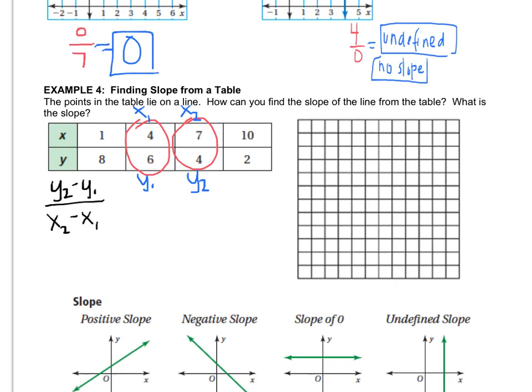So now you have everything labeled. And y2 is 4 minus 6 over 7 minus 4. And you could have called this x1 and y1 and this x2 and y2. It didn't matter. But anyway. So 4 minus 6 is negative 2 and 7 minus 4 is 3. So there we go. The slope is negative 2 over 3. Now I didn't use this grid because I didn't need to. I found the slope. I used the table and the formula to find the slope, which was negative 2 thirds.